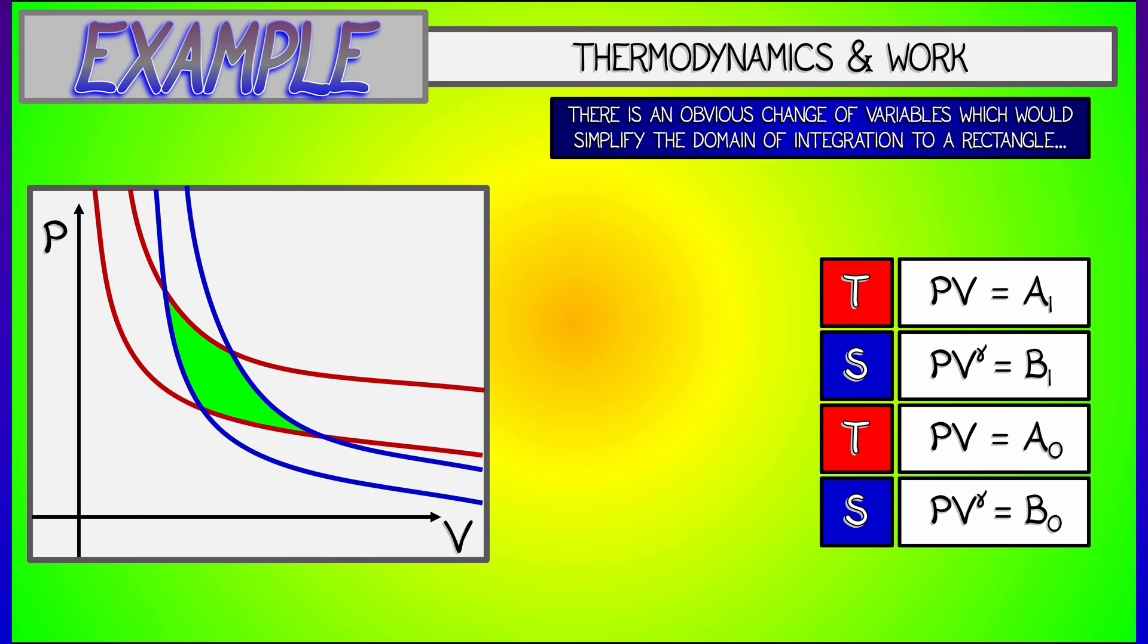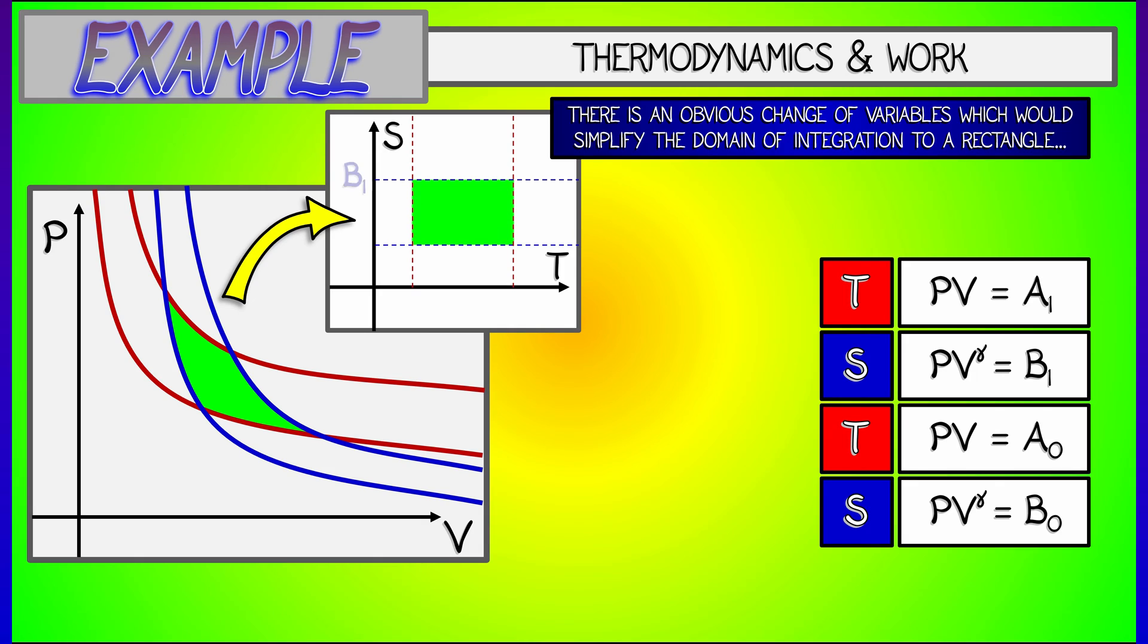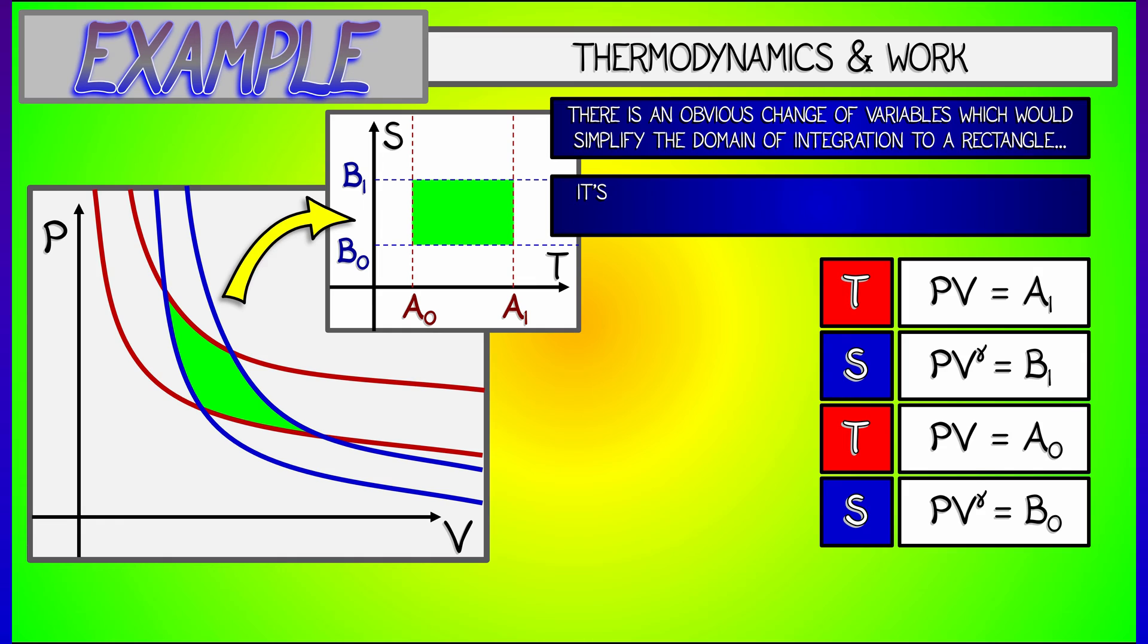So, we're going to let T be equal to P times V, and S equal to P times V to the gamma, giving us in the S-T plane a perfect rectangle. Now, of course, these variables are physically meaningful. T is a proxy for temperature, and S is a proxy for the entropy of the system. You don't need to know anything about that, but if you take a thermo class, then this is going to make a lot more sense to you.